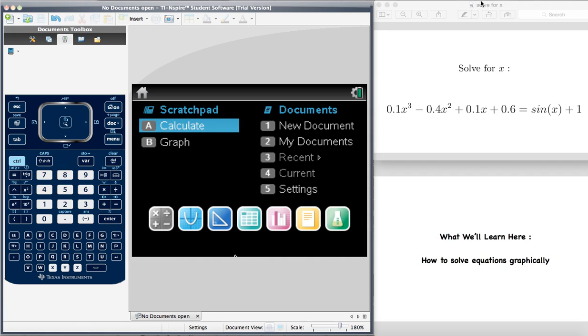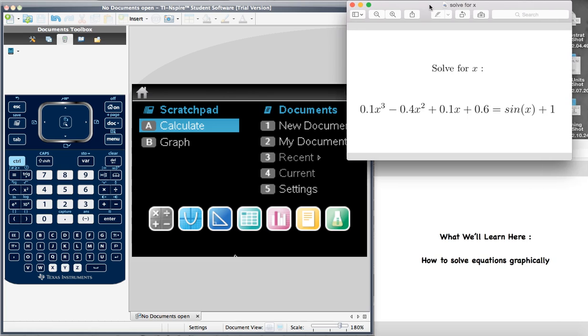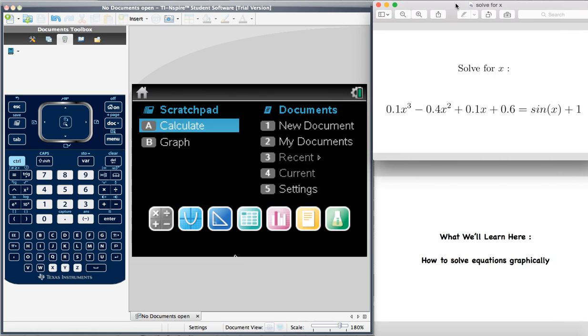Let's say we're given this equation here and we're asked to solve for x. Now we're given 0.1x³ - 0.4x² + 0.1x + 0.6 = sin(x) + 1.